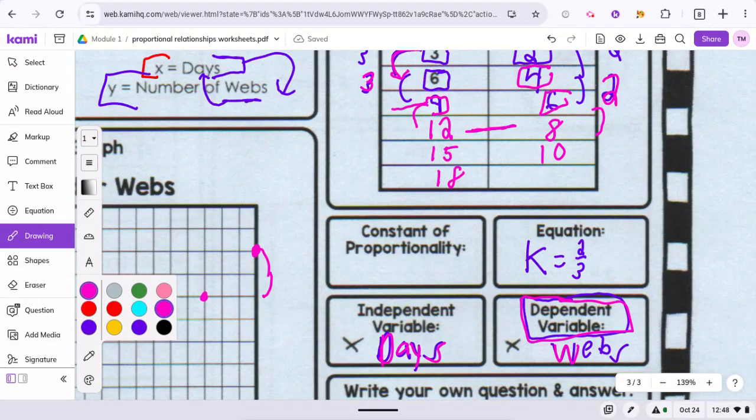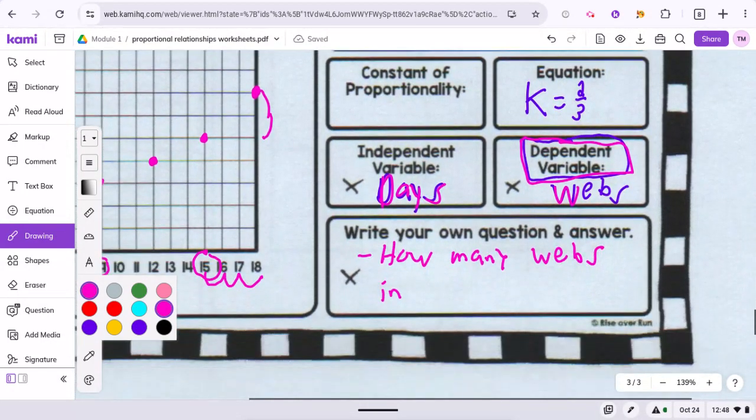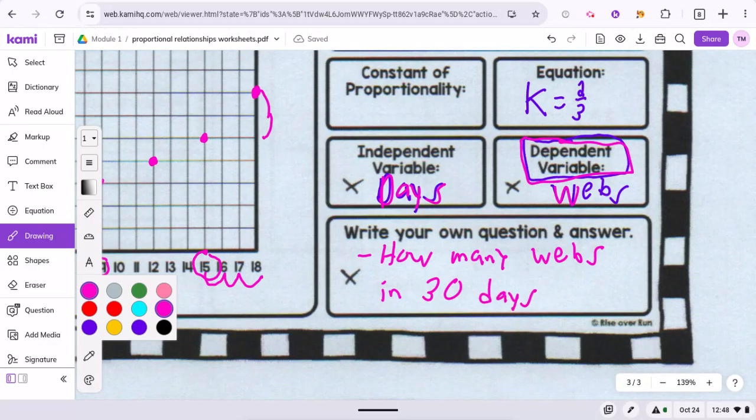You can say how many webs in 30 days. And then you can use the equation to answer that.